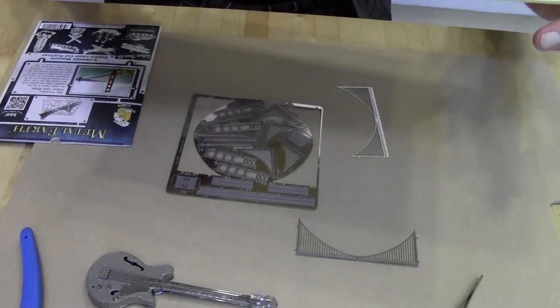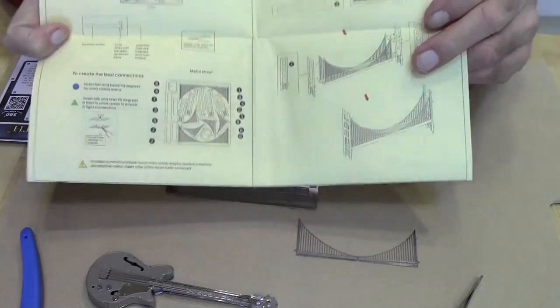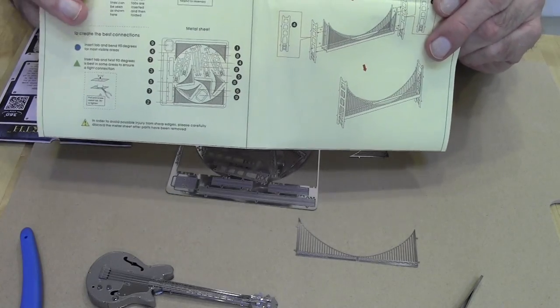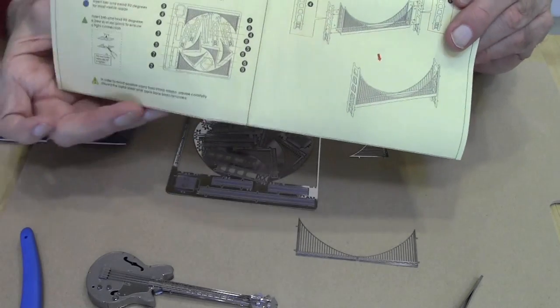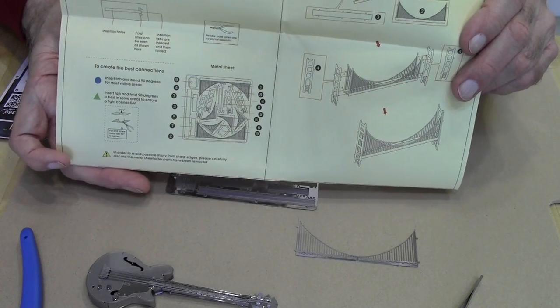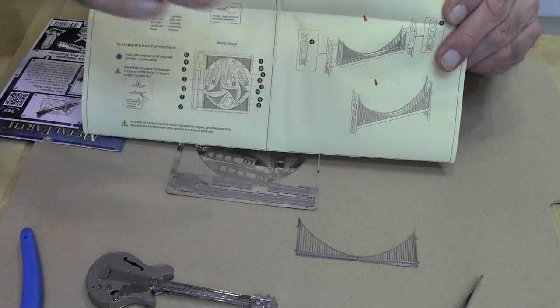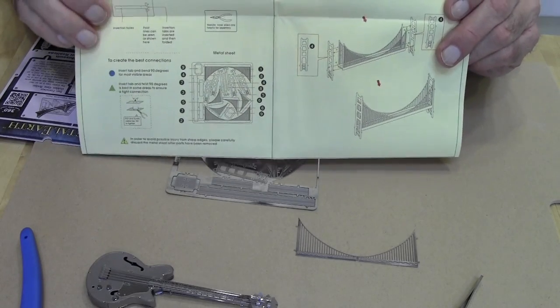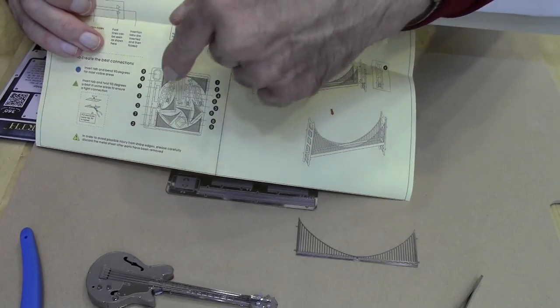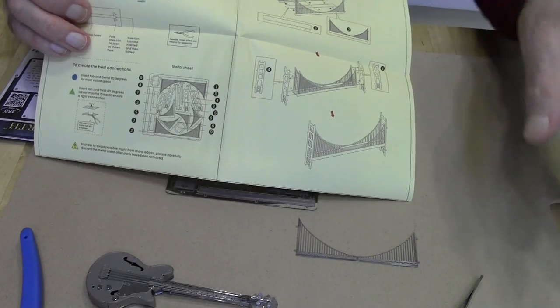The next step that I do is I'm going to cut out all of the pieces. The instructions are sequential but they're done by the numbers that show in the parts diagram. So I cut out all the pieces and put them in numerical order, and then you proceed through the instruction sheet by part number.